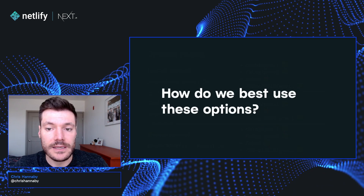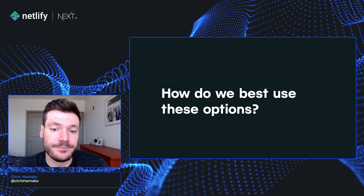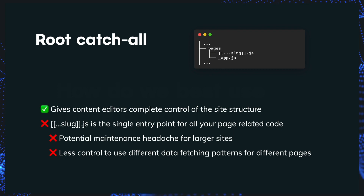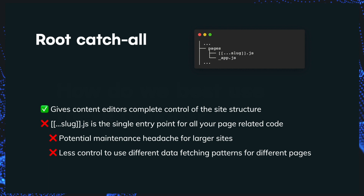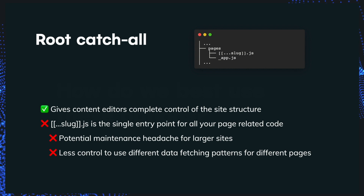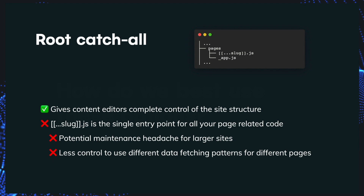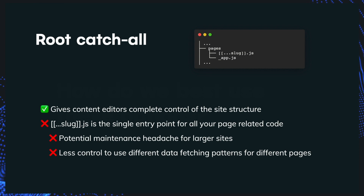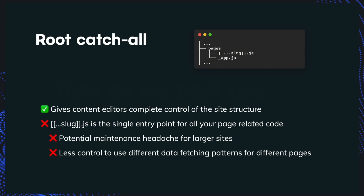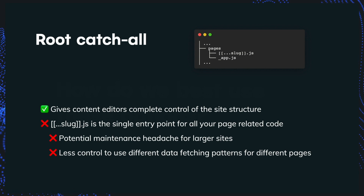So how do we best combine these different options to work nicely with a CMS? The first approach is one that you'll see often recommended by various CMS vendors, and that's to use a route catch-all. This is going to give content editors complete control to add pages anywhere within the site, but it also gives you a single file where you need to manage all of your Next.js page-related code. We've definitely seen that this can have a maintenance cost for teams that are building larger sites. This approach also means that it's much harder to use a range of data-fetching patterns across all our different pages, but it can work very well if our pages use static generation, maybe combined with On-Demand Builders for certain pages.